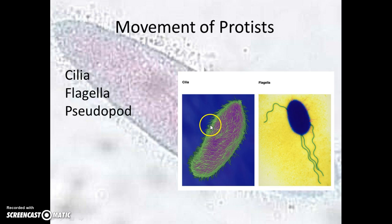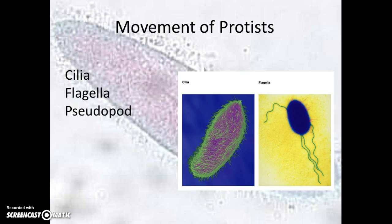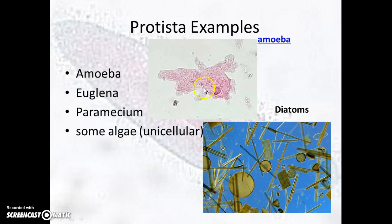Cilia are hair-like structures that go all the way around the cell; they help the organism move and get food into its oral groove. Flagella are long, tail-like structures that help some protists move. A pseudopod is what an amoeba uses to move — they call it a false foot, where the cell just extends itself out to create a false foot. These extensions on an amoeba are considered pseudopods.